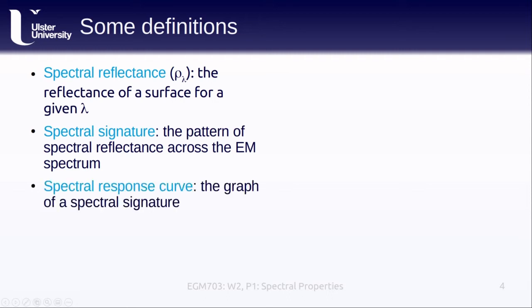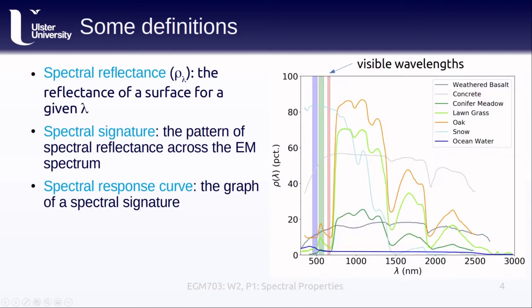The spectral signature of an object or surface is just the pattern of spectral reflectance across the electromagnetic spectrum. We can display an object's spectral signature as a spectral response curve, several examples of which are shown here.